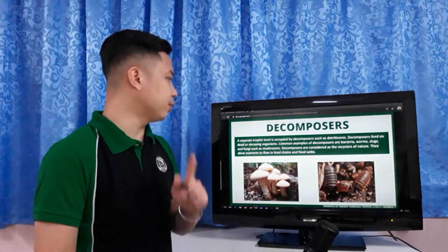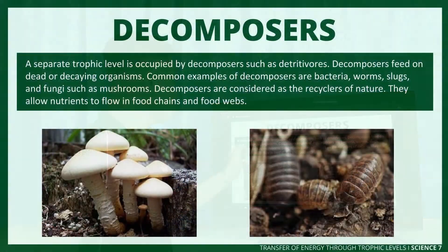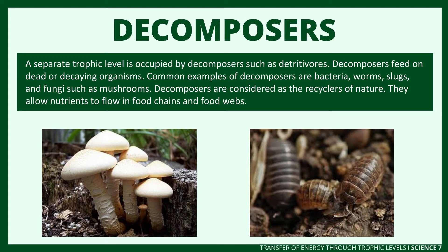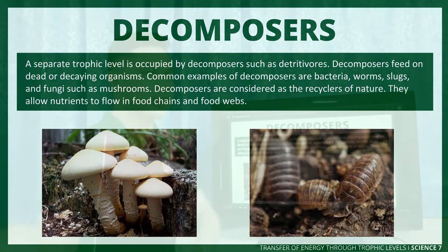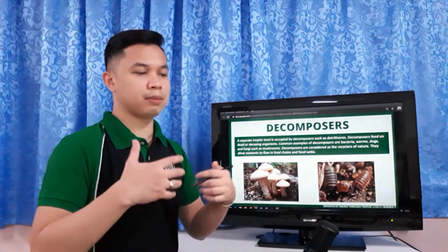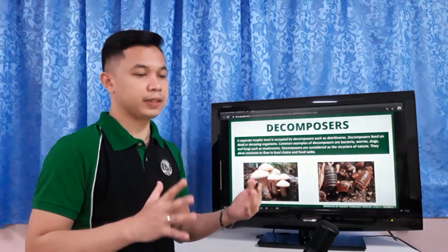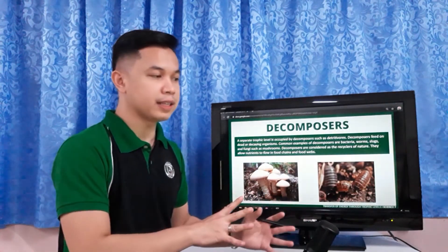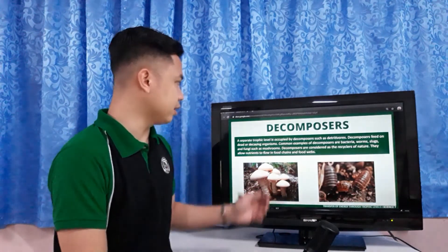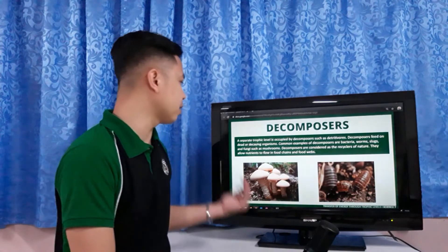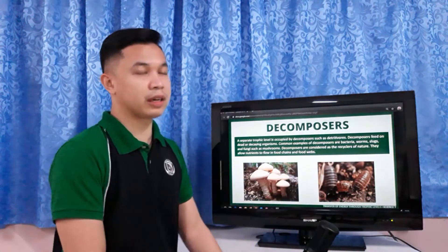There is also what we call decomposers. A separate trophic level is occupied by decomposers such as detritivores. Decomposers feed on dead or decaying organisms. Common examples of decomposers are bacteria, worms, logs, and fungi such as mushrooms. Decomposers are considered the recyclers of nature — they allow nutrients to flow through the food chain and food web. All organisms will eventually die, and decomposers are the ones that break down that dead or decayed matter.